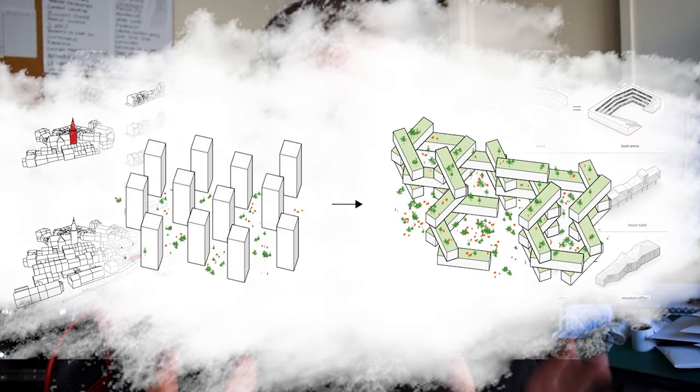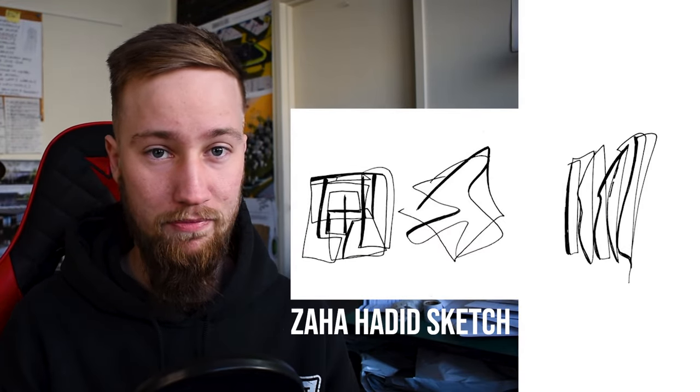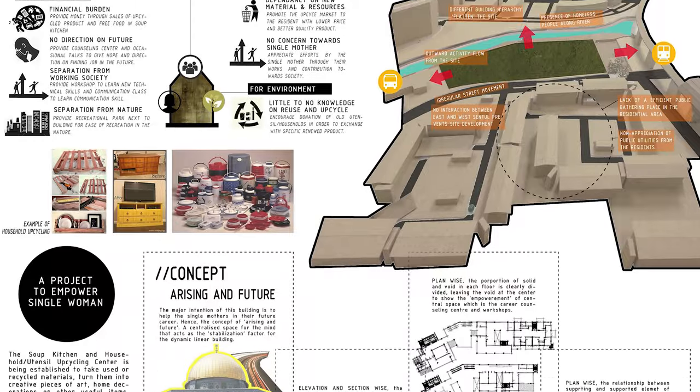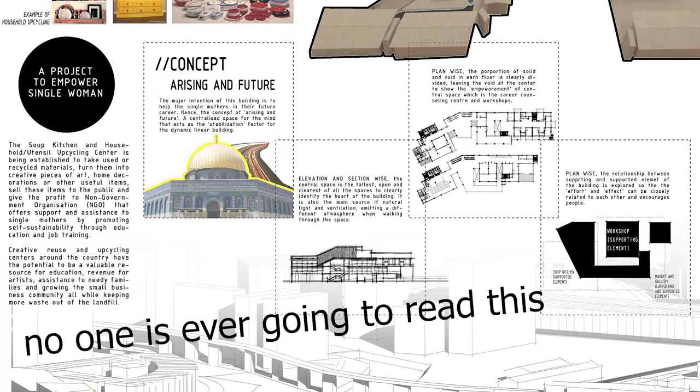Architecture diagrams might seem like an afterthought for most students, but they are an essential tool for communicating and generating ideas. As an architect, here are six types of architecture diagrams you should be using and why. A lot of the time I see students that don't know what architecture diagrams are for — these students often have really good architectural drawings, good floor plans, sections, and elevations, but their presentations often have paragraphs of text trying to explain what's going on, when really a picture tells a thousand words.